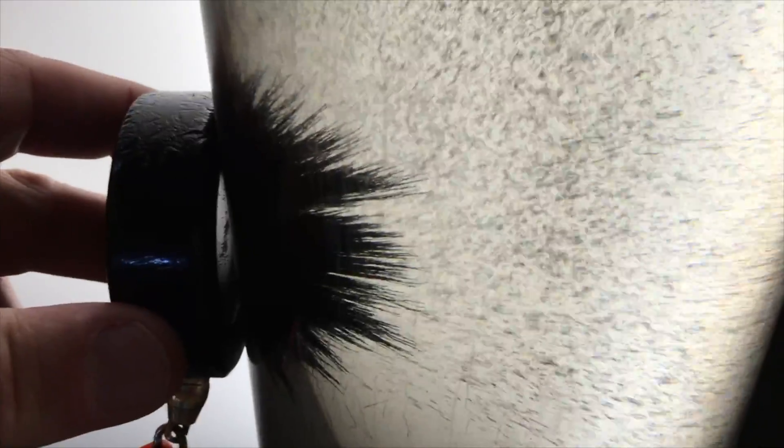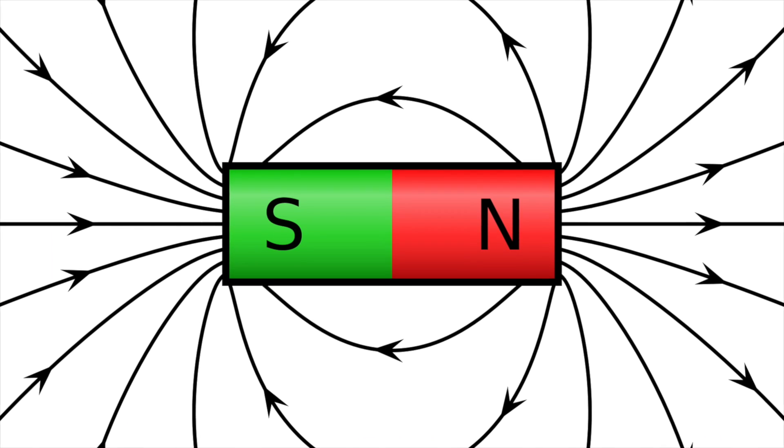These spikes continue to grow as particles add to the ends. These spikes of iron particles line up and form along the magnetic field lines created by magnets.